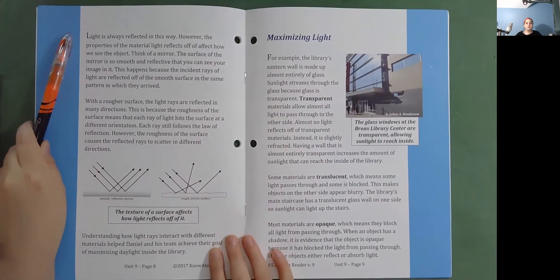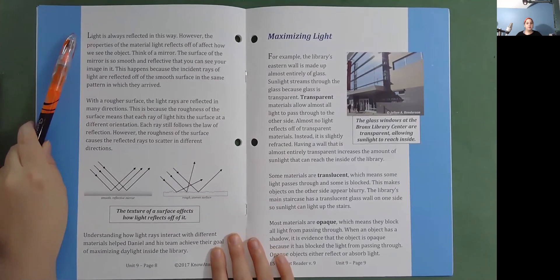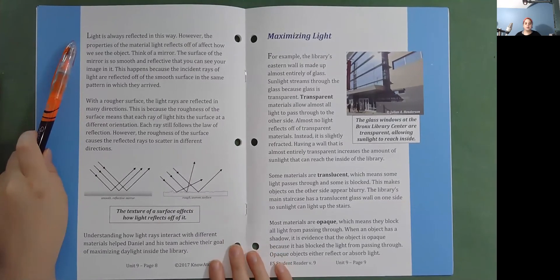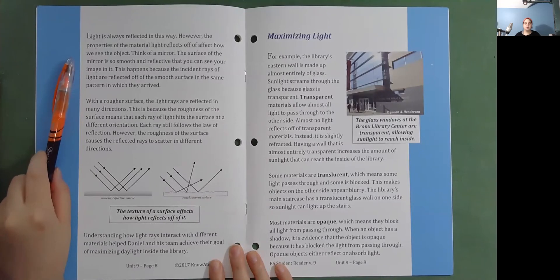Light is always reflected in this way. However, the properties of the material light reflects off of affect how we see the object. Think of a mirror. The surface of the mirror is so smooth and reflective that you can see your image in it.